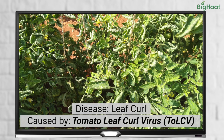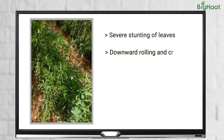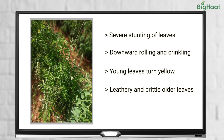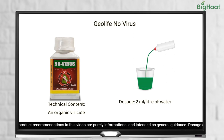Leaf curl is yet another disease that can affect your tomato crops, caused by tomato leaf curl virus. The symptoms include severe stunting of leaves, downward rolling and crinkling, with young leaves turning yellow and curling. Older leaves can become leathery and brittle, and an infected plant can appear pale with bushy lateral branches. To prevent leaf curl, you can use a spray solution of Geolife Novirus at the rate of 2 millilitres per litre of water.